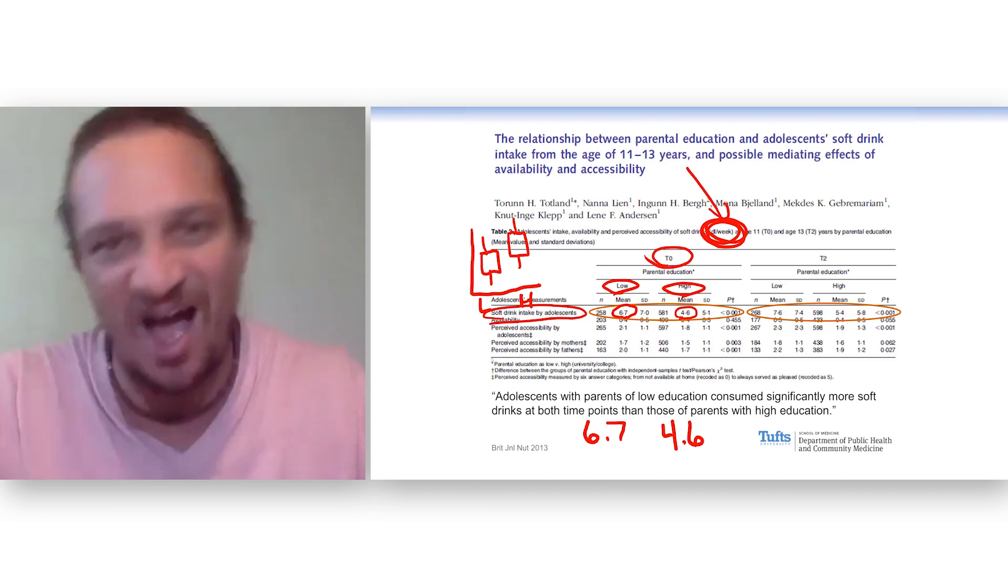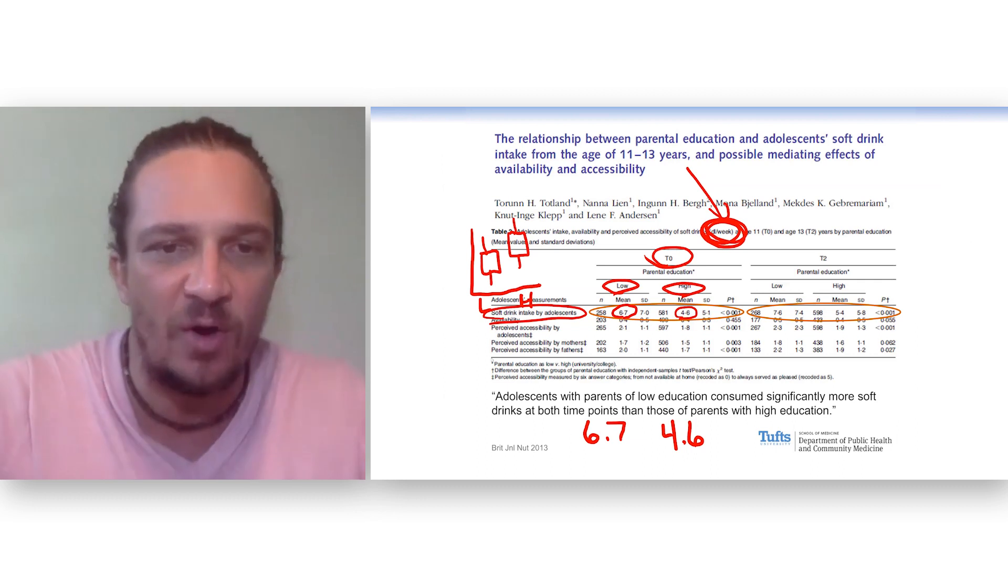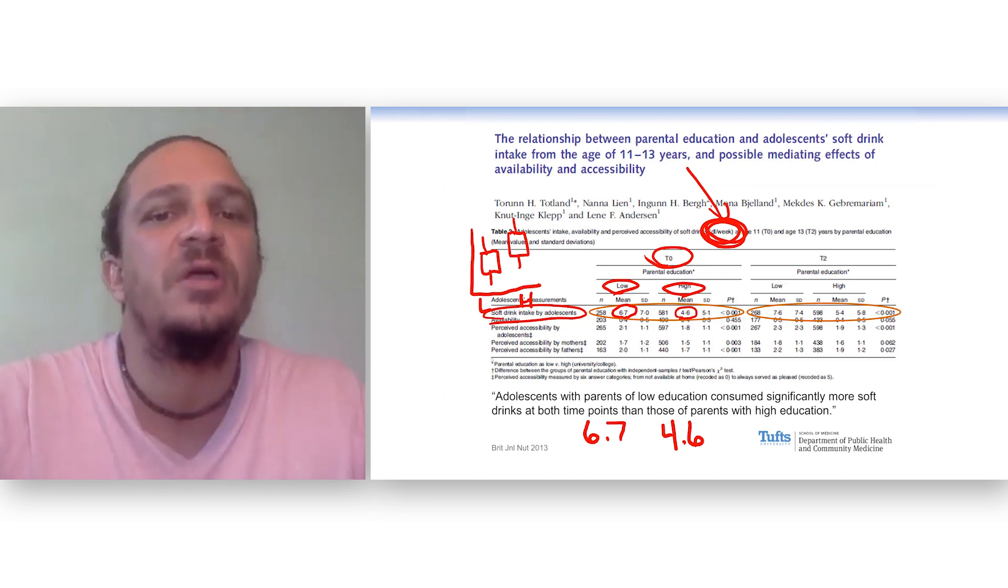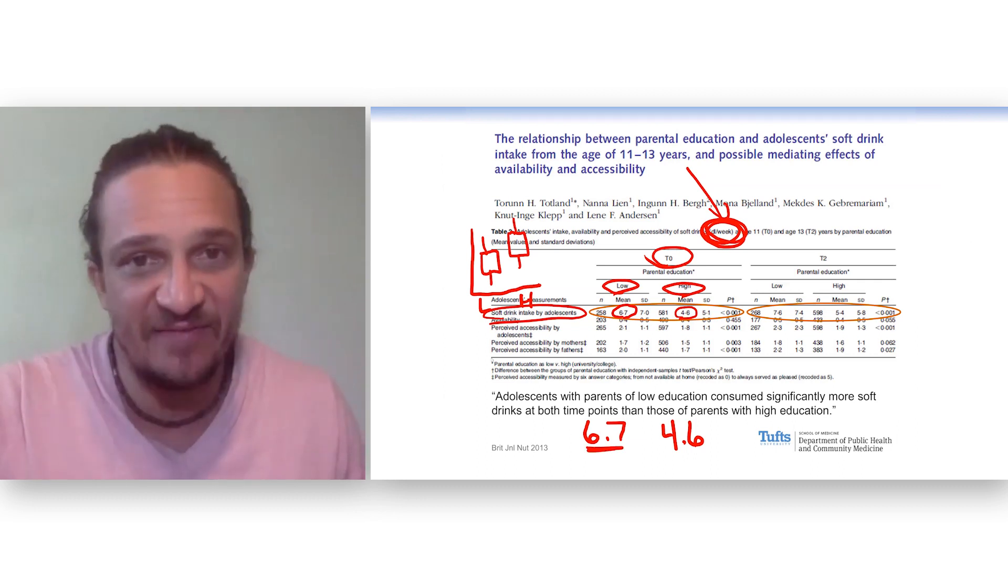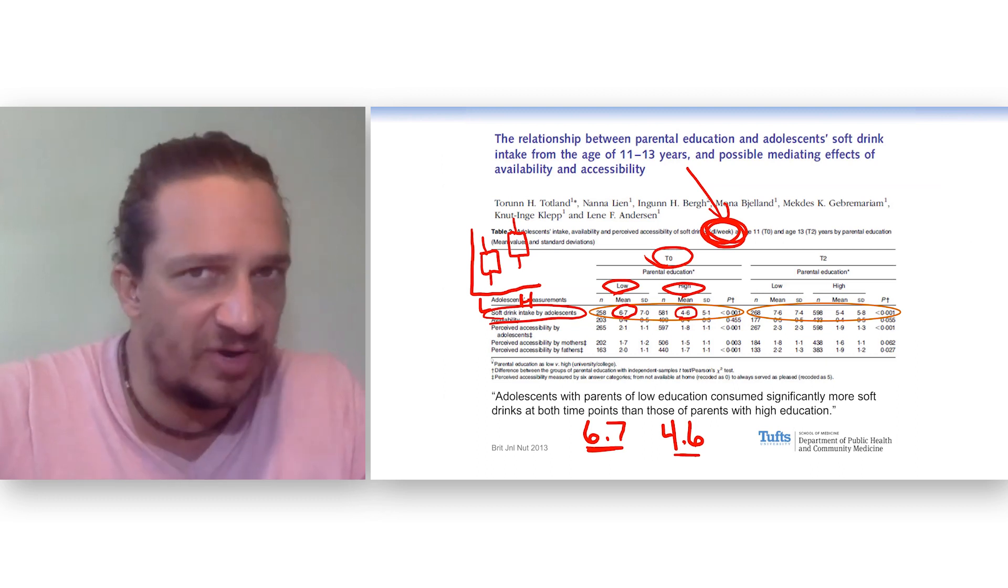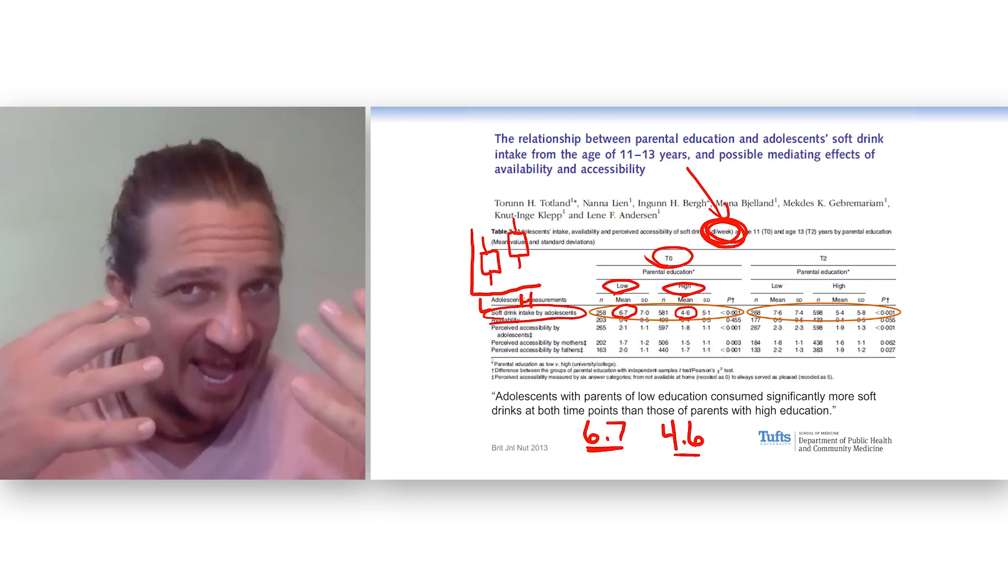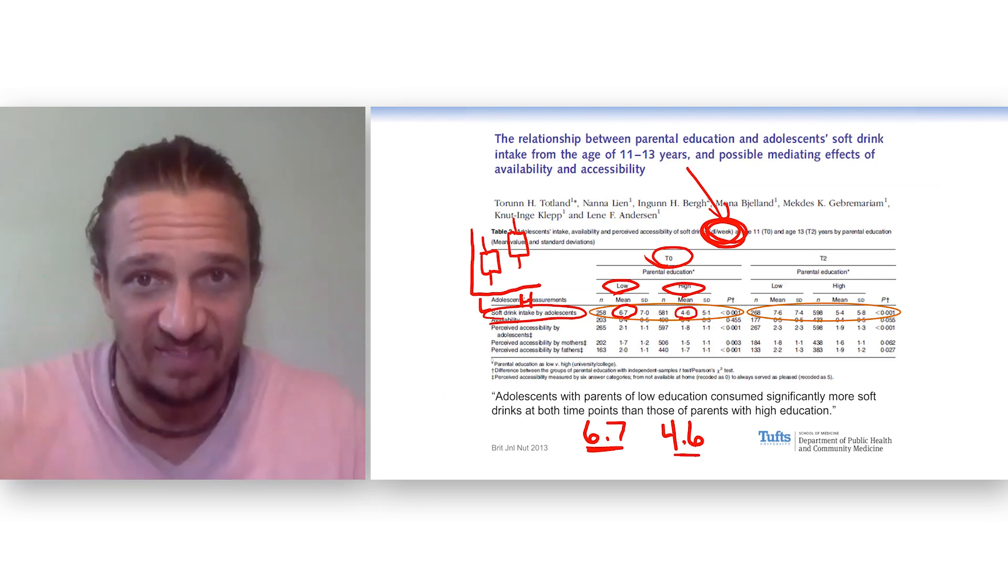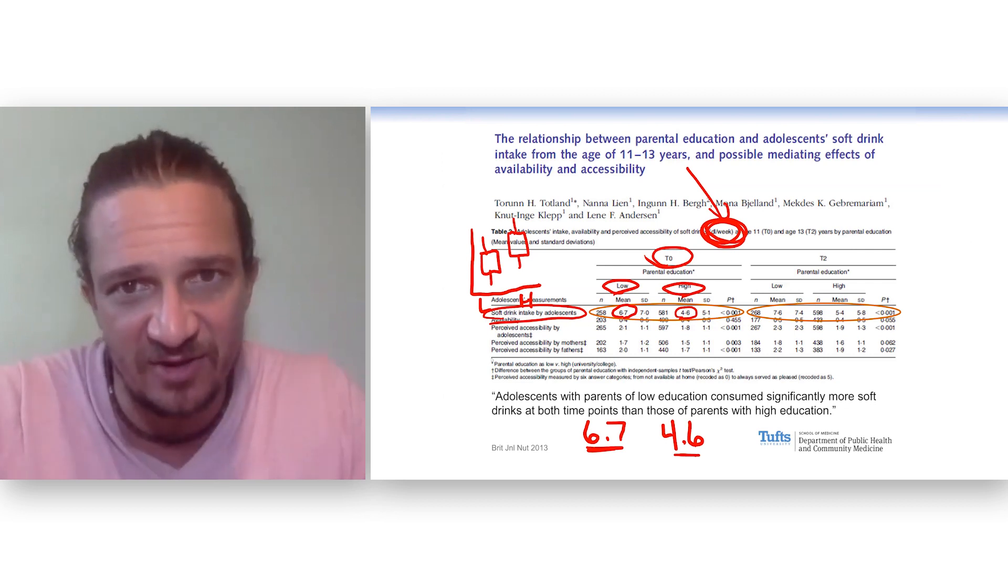But we can see that it's higher in one group than the other. Now, can you write to a journal and say, hey, 6.7 is bigger than 4.6? No, you have to do a statistical test. You have to say that could be due to chance alone. What's the probability that if these two groups are the same, I would get a difference like that? That's called the p-value.